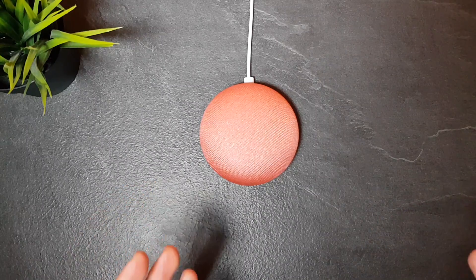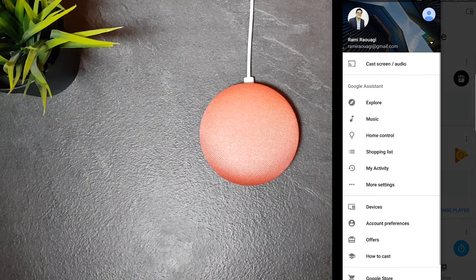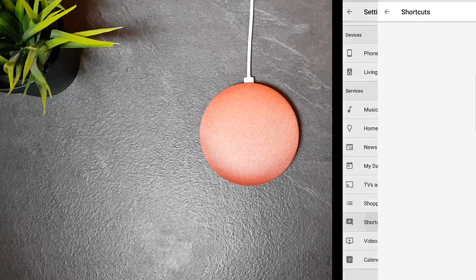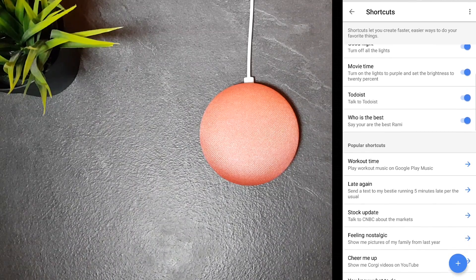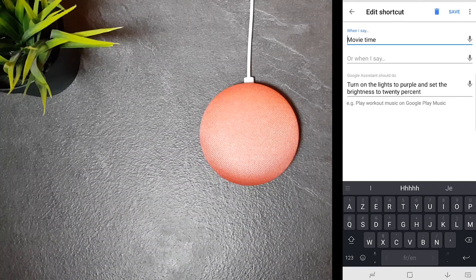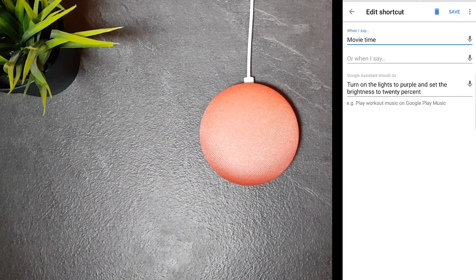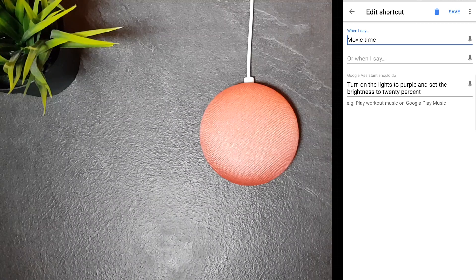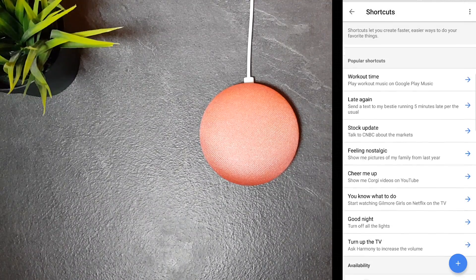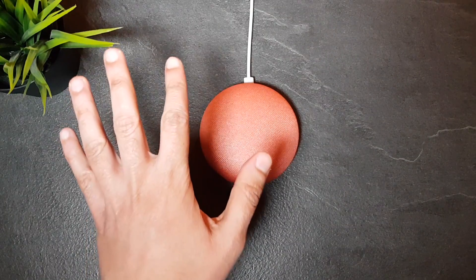To customize any command you want, just head to the Google Home app, swipe right, go to more settings, then scroll down to shortcuts. Then you can either choose from the available shortcuts or create your own. In my case I just added the command 'movie time' and assigned this action to it. Actually there are tons of possibilities, so I will let you explore and play with the settings.